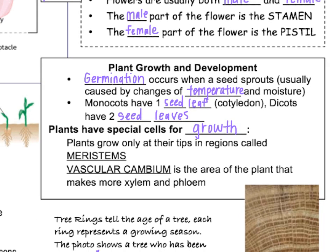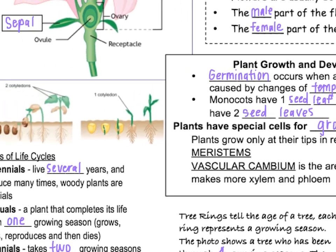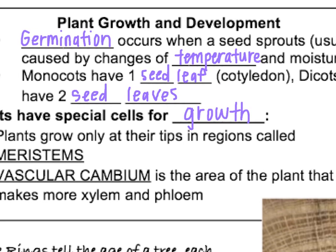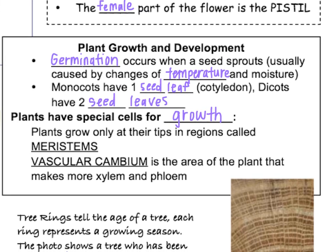Once a seed gets planted, germination has to happen. Germination usually happens because of a change in temperature or moisture, which lets the plant know it's the right time of year to grow, and then the seed will sprout. As that seed sprouts, it's going to have an initial leaf that forms inside the seed, called a cotyledon. If only one leaf forms, we say it has one cotyledon, and if two leaves form, it has two cotyledons. This is one of the ways we classify plants — monocots have one seed leaf, and dicots have two seed leaves.